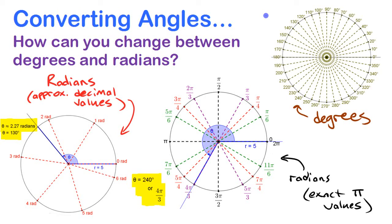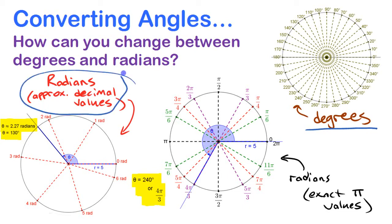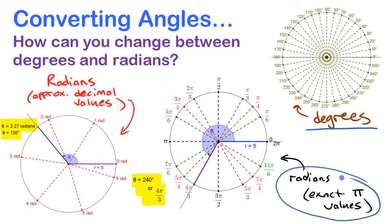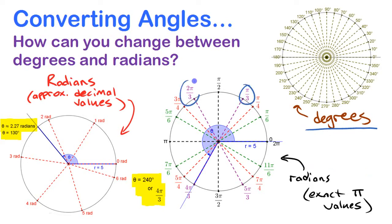We're going to look at how we can convert between various ways of measuring angles — between degrees and radians — both as approximate decimal values and as exact values in terms of pi, like pi over 3, two pi over 3, five pi over 6, or values like approximately 2.27 radians.